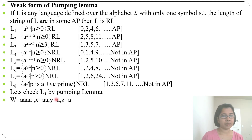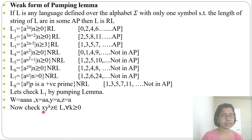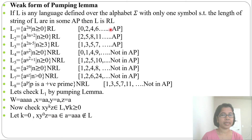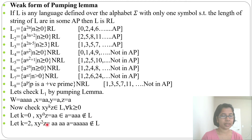For L1 = {a^(2n) | n ≥ 0}, the number of a's can be 0, 2, 4, 6, 8, ... Let w = aaaa (4 a's). Split as x = aa, y = a, z = a. For k = 0: x·y^0·z = aa·ε·a = aaa (3 a's) — odd, not in L. For k = 2: x·y^2·z = aa·aa·a = aaaaa (5 a's) — also odd, not in L. So the pumping lemma appears to prove L is non-regular.